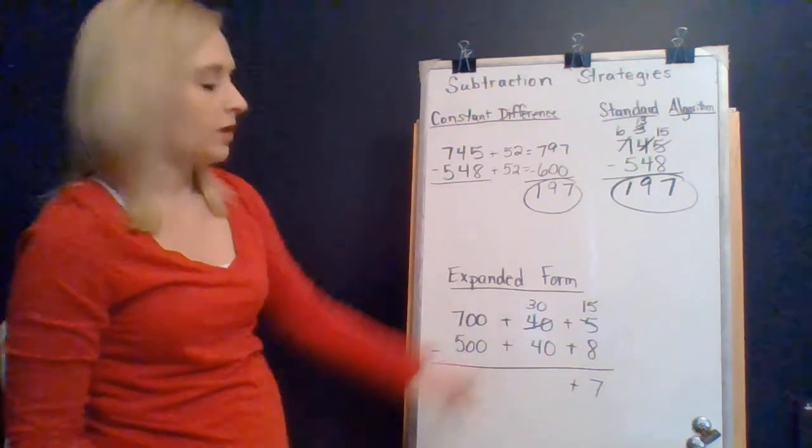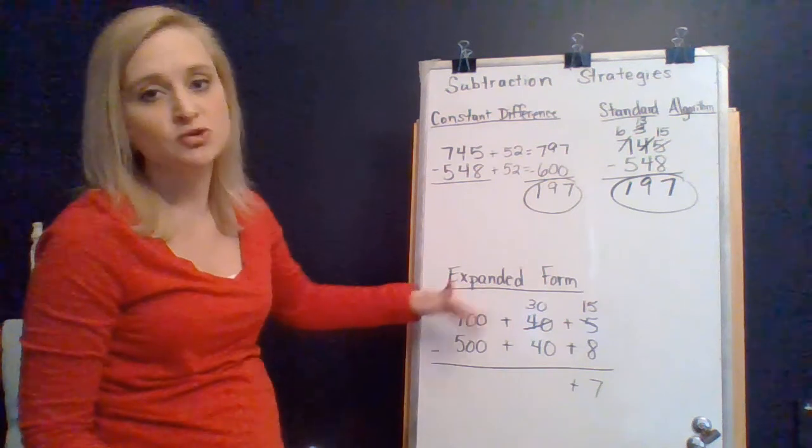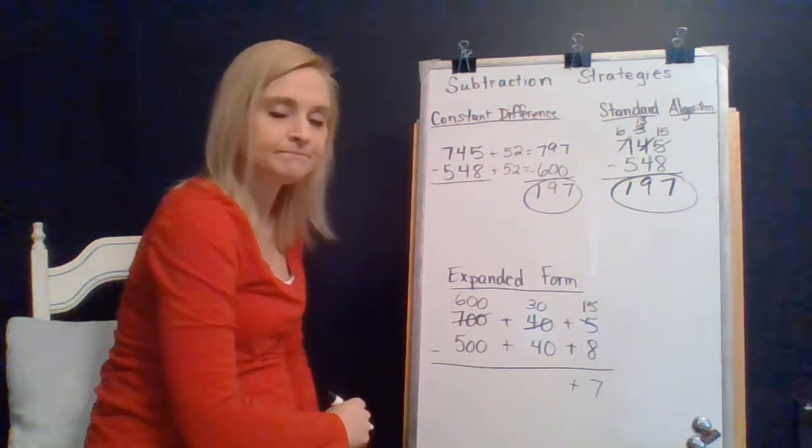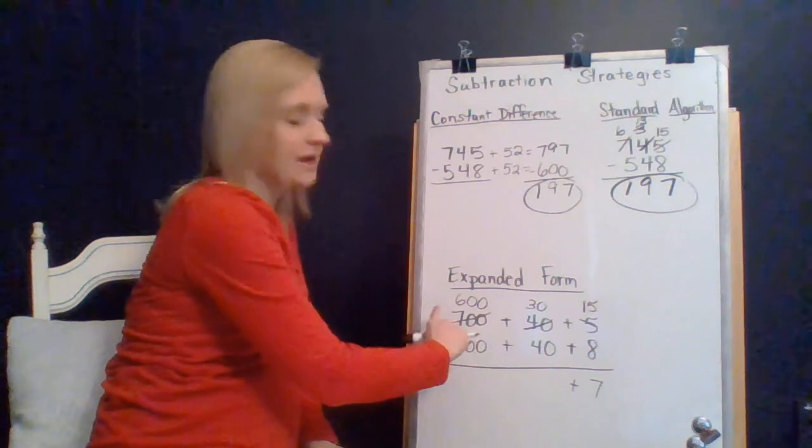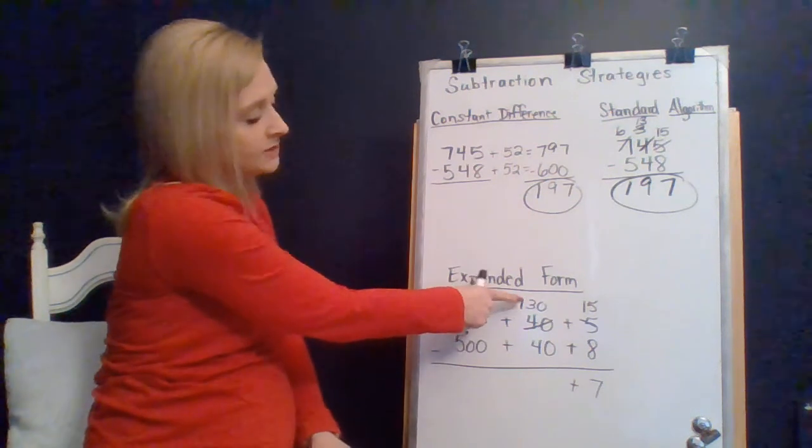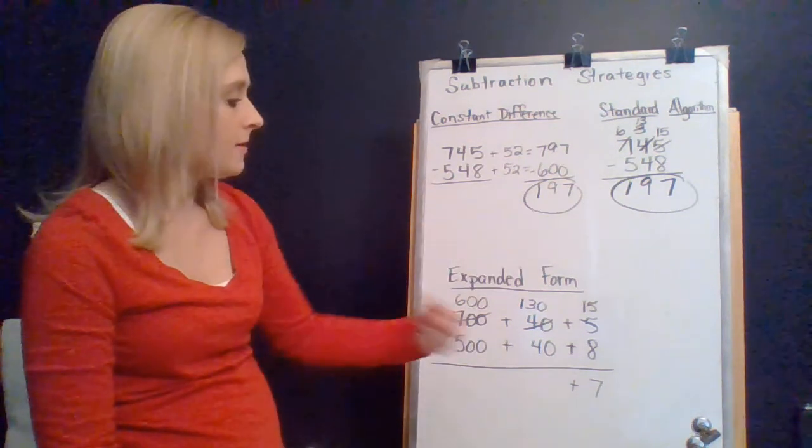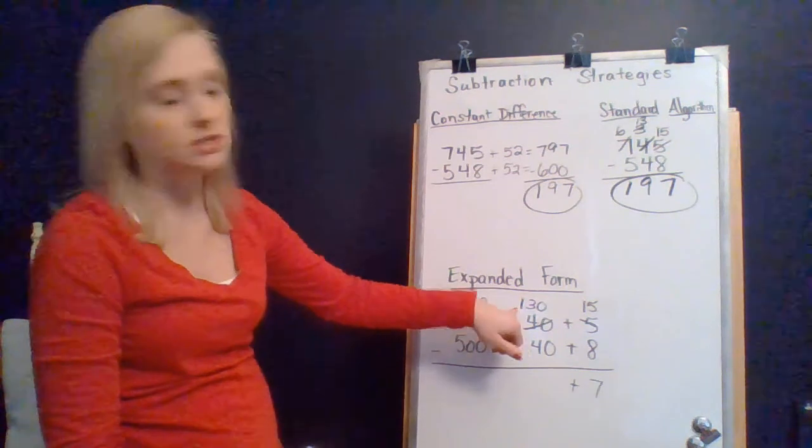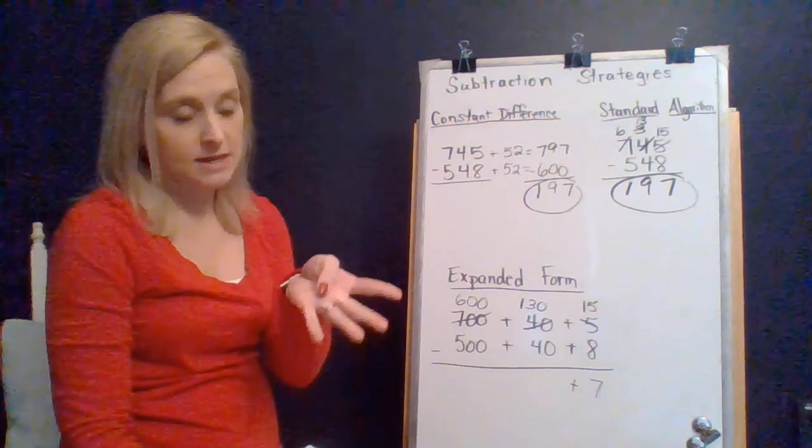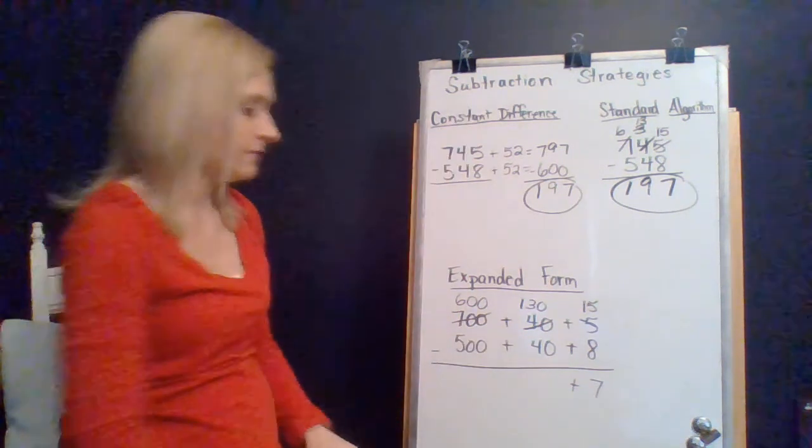Can we do 30 and remove 40? Just like up here, we have the same issue. We cannot do that. But we have some hundreds over here that we can regroup. So, I'm going to take a hundred from there, which leaves 600. I'm going to bring that hundred over here. If I can combine 100 plus the 30, I'm going to have 130. Now, what's the difference between 130 and 40? Now, if you're trying to skip back by tens four times, that's a great strategy. So, 130, 120, 110, 100, and then back to 90. That's skipping back four tens, right? Or, you can start at 40 and count up to the difference and find the difference of 90.